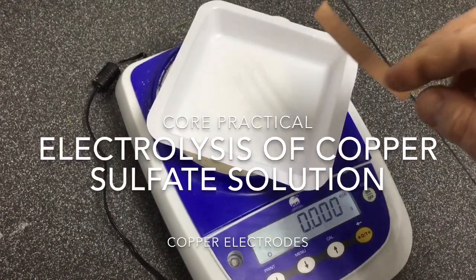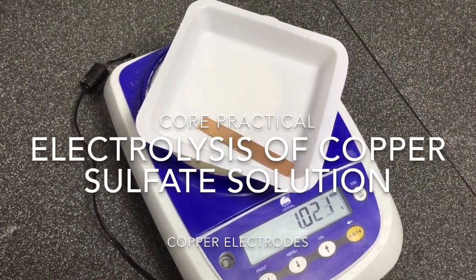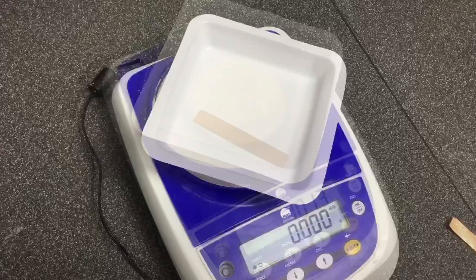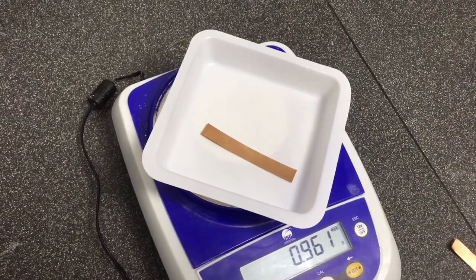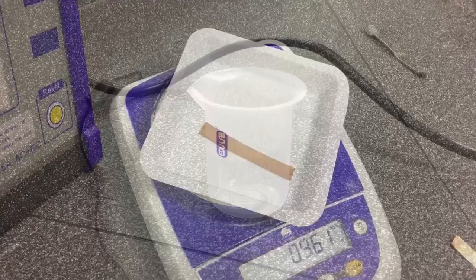In this experiment we will investigate the electrolysis of copper sulfate solution using copper electrodes. Our first step is to measure the mass of each of the two different electrodes that will act as the anode and the cathode.